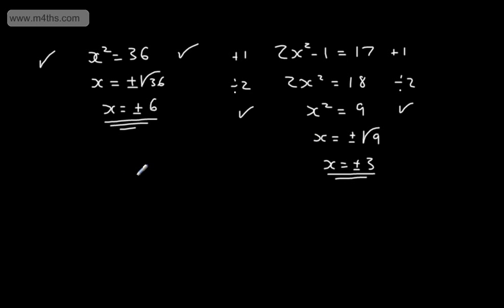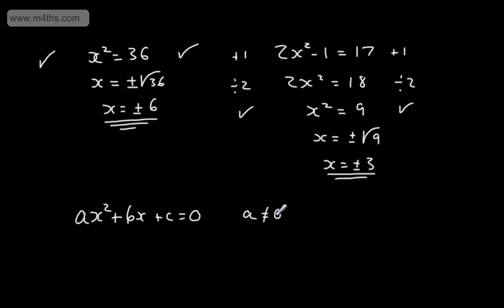We're now going to move on and look at some more challenging examples. All quadratic equations can be written in the form ax squared plus bx plus c is equal to 0. In this particular case, a can't be equal to 0, as it would just end up being bx plus c, which is what we call a linear equation. Let's look at an example: 2x squared minus 3x plus 1 is equal to 0. That's a quadratic equation.